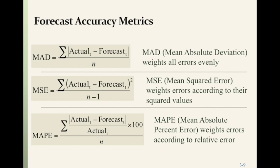Here are some accuracy measurement metrics. The first is MAD — Mean Absolute Deviation — which weights all errors evenly. You take the sum of the absolute value of (actual minus forecast) divided by n. The second is MSE — Mean Square Error — which weights errors according to their squared values: sum of (actual minus forecast) squared divided by n minus 1. The last is MAPE — Mean Absolute Percent Error — which weights errors according to relative error: the sum of (|actual minus forecast| divided by actual, times 100) divided by n, giving a percentage.